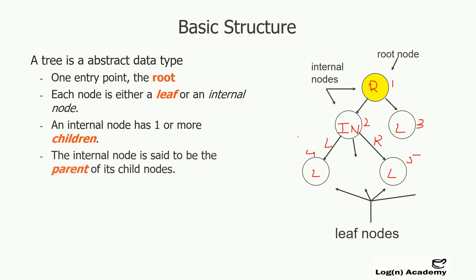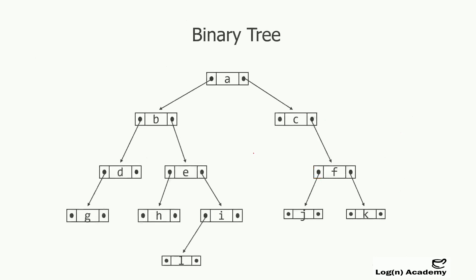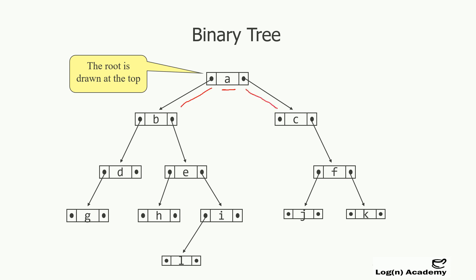An internal node is said to be the parent of its children. For example, one node is the parent of two child nodes, and those two nodes are the children of that parent node. In a binary tree, we have a root node at the top, and the root node contains references to its children. Node A has a reference to its left child and its right child. Node B contains references to its left and right child. Node C only has a right child and no left child, so the left reference is null. This is the basic structure of a binary tree.